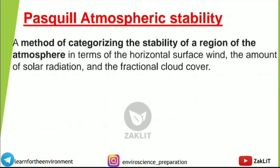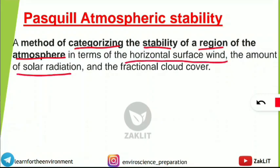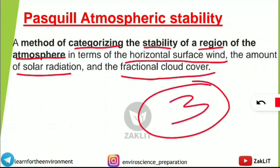Pasquill's atmospheric stability is a method of categorizing the stability of a region of the atmosphere. Three key factors are considered when categorizing atmospheric stability using Pasquill's method: horizontal surface wind speed, the amount of solar radiation reaching that atmosphere, and the fractional cloud cover present in that atmosphere.